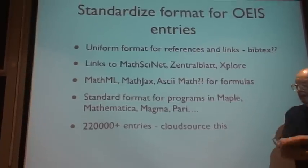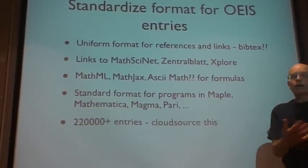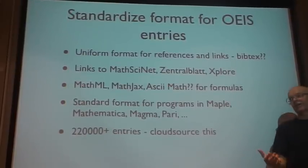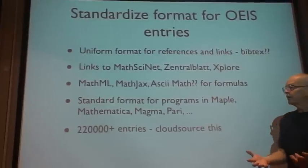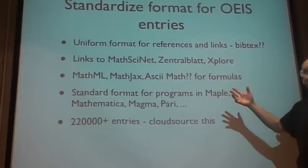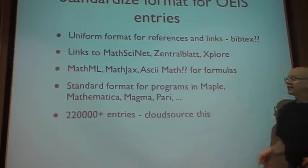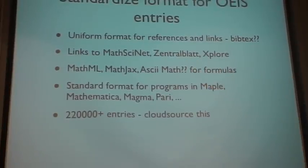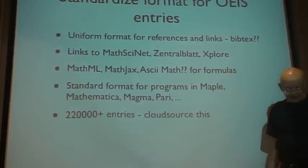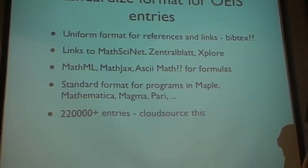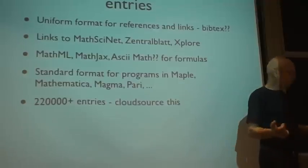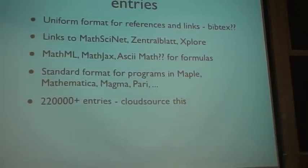Another thing for the future is to standardize entries in the OEIS. At the moment, all the references are in all different kinds of formats. I don't know what the best format is. Is there a uniform format that takes care of journal references, books, links, URLs? I would like to systematize, just to make it easier to search. BibTeX is okay, but BibTeX doesn't really work. It has some drawbacks. Another thing is I'd like to have links to MathSciNet, to Zentralblatt, IEEE Explore, and so on from sequences. I'd like to put the formulas into some more systematic way, maybe ASCII Math or MathML. And programs need to be standardized. So with 200,000 sequences, this will take a lot of work, but it would seem that we could crowdsource this once we decide what has to be done.